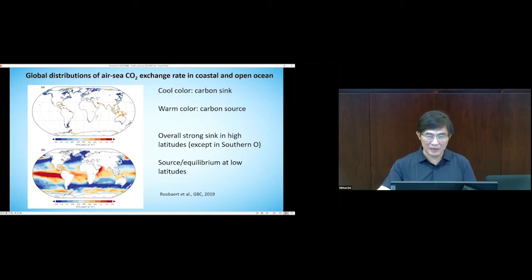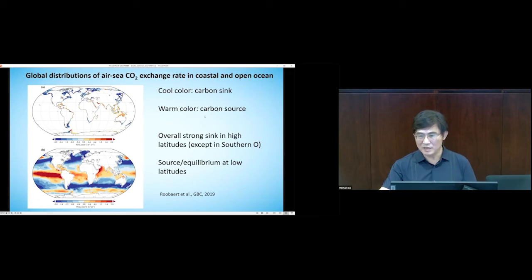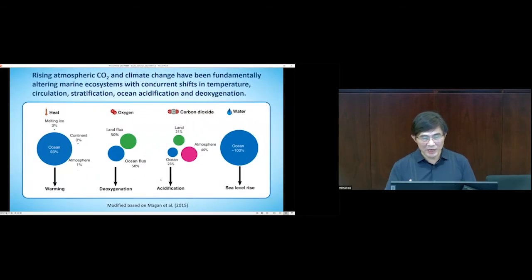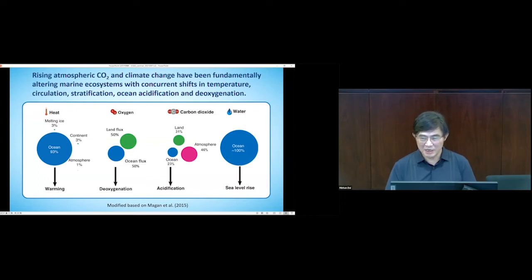This gives you an idea of how the ocean grabs CO2. The upper panel shows the coastal ocean and the lower panel the global open ocean. Cool colors signify carbon sink and warm colors indicate CO2 emission to the atmosphere. There's a strong latitudinal pattern: overall strong uptake at high latitudes, with CO2 sources or near-equilibrium at lower latitudes. With rising pCO2 and climate change, the marine ecosystem has fundamentally changed — with shifting temperatures, warming, altered circulation patterns, stratification, acidification, and deoxygenation. These are the symptoms of rising atmospheric CO2.